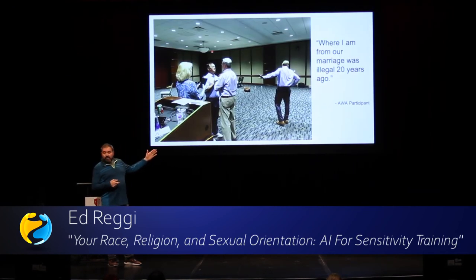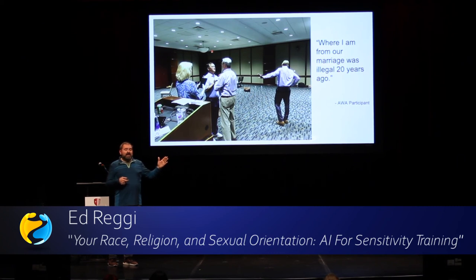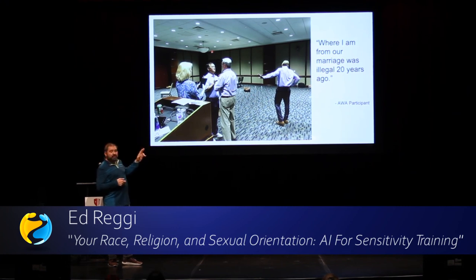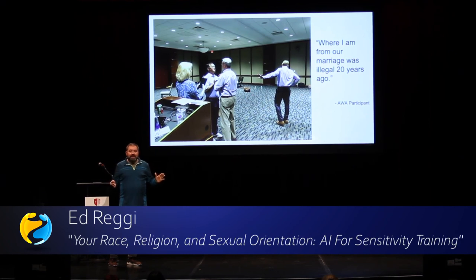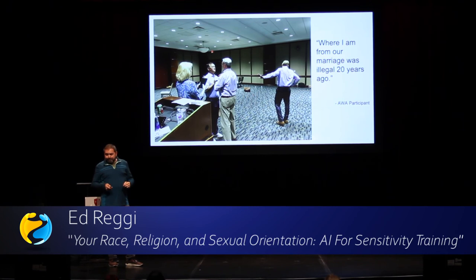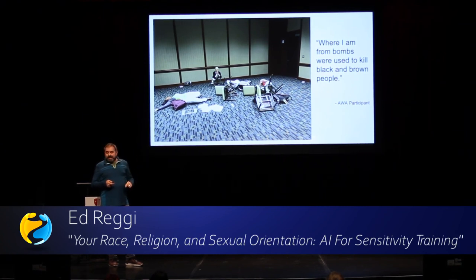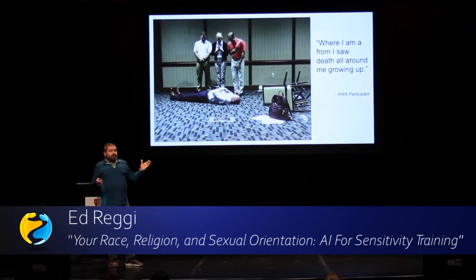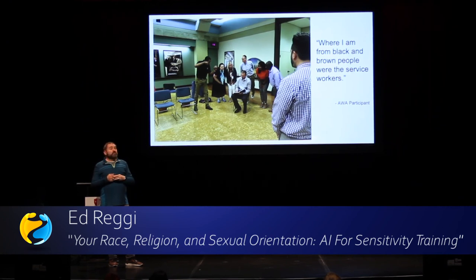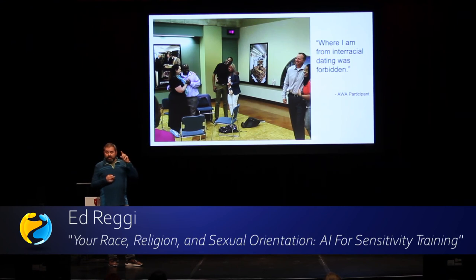Some examples from a recent session: 'Where I'm from, our marriage was illegal 20 years ago' — said by an African-American woman, but when translated into a tableau, it was recreated by two high-level VPs from the bank who are heterosexual. 'Where I'm from, bombs were used to kill black and brown people' — this bank's headquarters is based in Birmingham, Alabama, and some people there actually remember it as a child. 'Where I'm from, I saw death all around me growing up.' 'Where I'm from, black and brown people were the service workers.' 'Where I'm from, interracial dating was forbidden.' They get to create these tableaus, and there's laughter in some cases and tears in others.